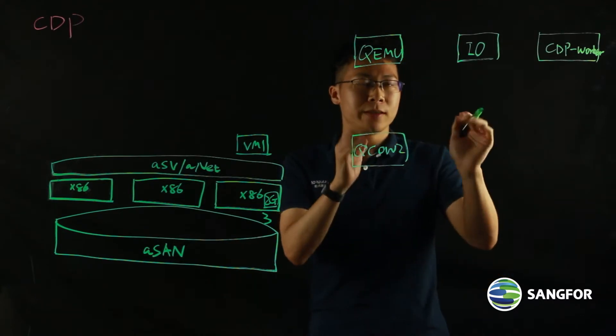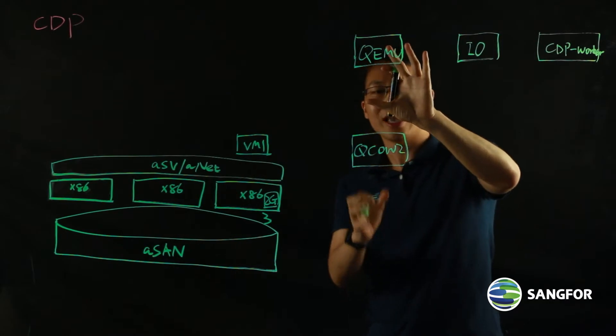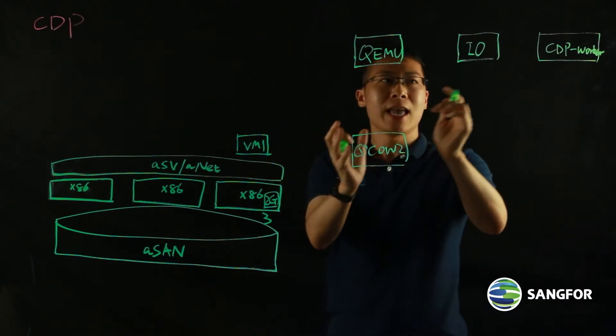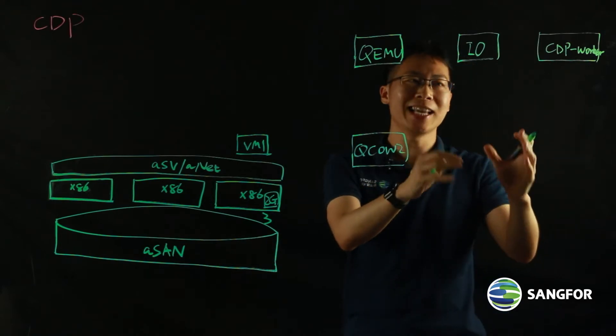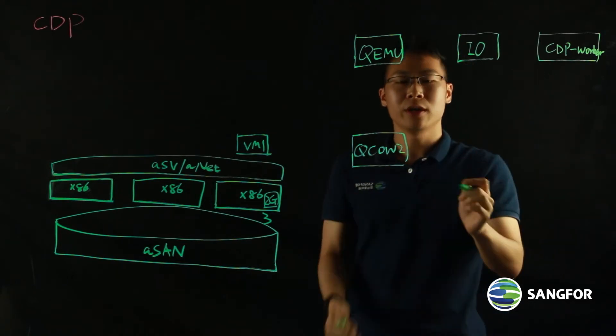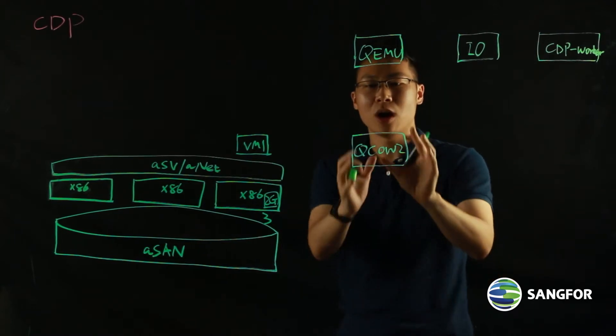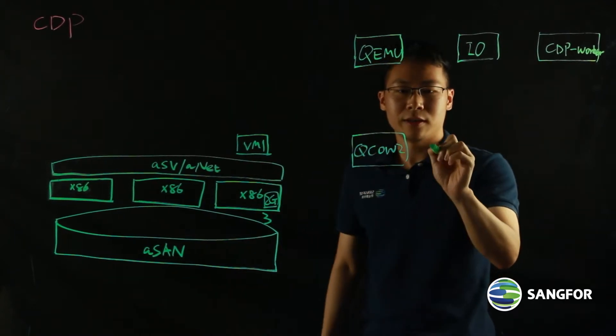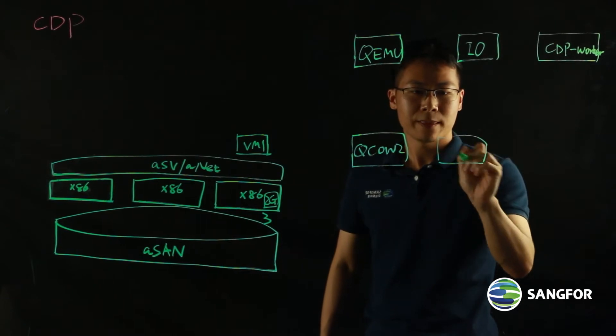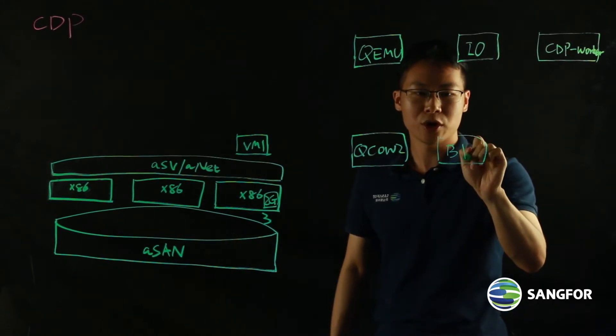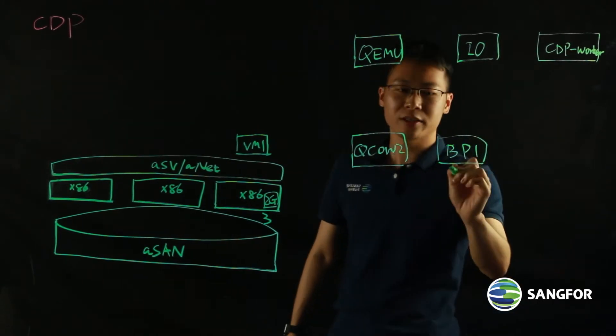So the process is like this. The QEMU and the QCOW2 make up of your VM. And when the CDP is activated, first, the system will initiate a full backup of the QCOW2. So there will be a full backup. Let's say this is called a backup point on our CDP. We call it BP1. This is a full backup.